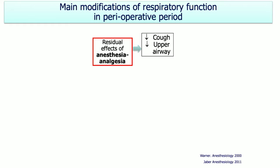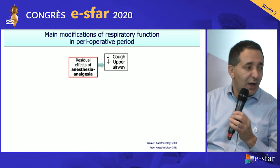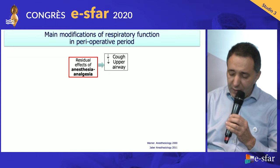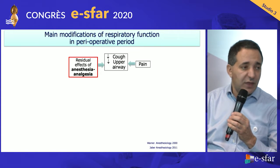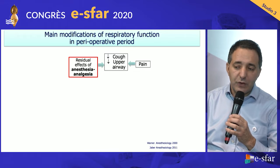First of all, as in general anesthesia, you will use anesthesia drugs, and mainly you have the residual effect of analgesia and anesthetic drugs. The impact — several impacts — one of the main impacts is the decrease of the strength of the cough. Secondly, you have a decrease of the patency of the upper airway, and then you also have the effect of pain, mainly due to the stress of the surgery.